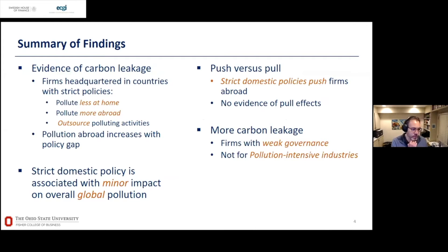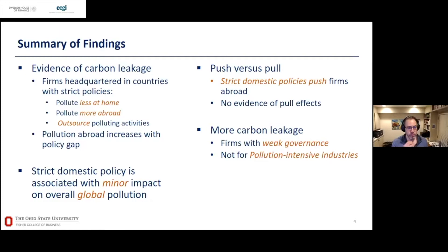To quickly summarize the findings: there is substantial evidence of carbon leakage, meaning firms headquartered in countries with strict policies pollute less at home but more abroad. There is also evidence — with some caveats — of outsourcing polluting activities upstream to suppliers. Pollution exported abroad is higher when there is a bigger environmental policy gap between the home country and the foreign country.